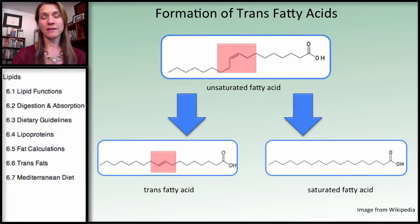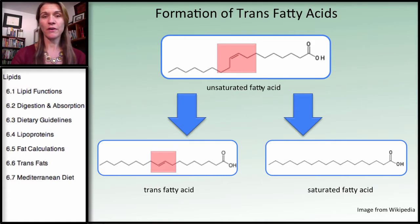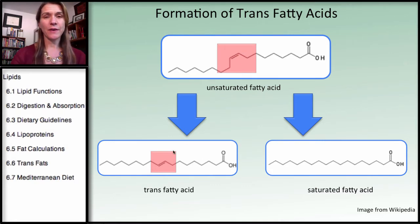This is a process done by manufacturers in order to extend the shelf life of food products, because unsaturated fats are less stable than saturated fats. So under pressure, hydrogen is injected into the liquid vegetable oil or the unsaturated fatty acid. This produces a saturated fatty acid — that's part of the goal — but also a trans fatty acid. I want you to look at the trans fat versus the unsaturated fat at the double bond.